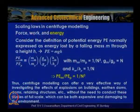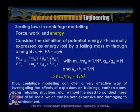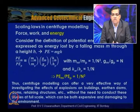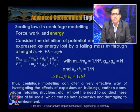We discussed how we can scale down force, work, and energy. While scaling down energy, it can be in the form of potential energy or kinetic energy. Potential energy is defined as the energy lost by a mass m falling through height h, so PE = mgh. For centrifuge-based physical modeling, comparing model and prototype gives PE_model / PE_prototype = 1/n³.